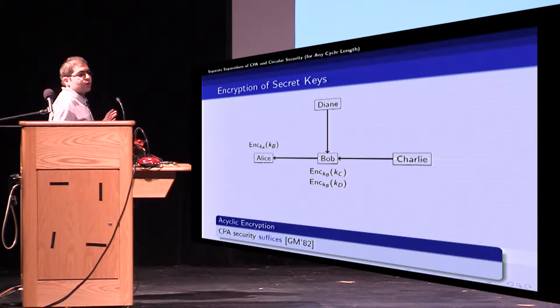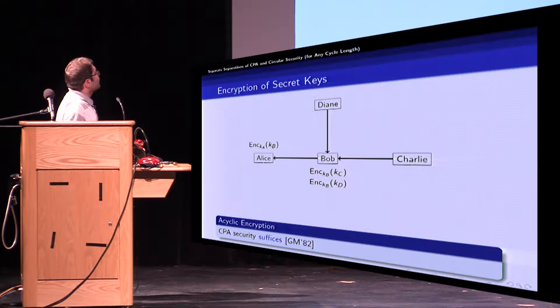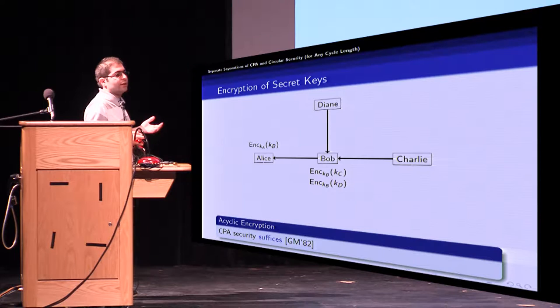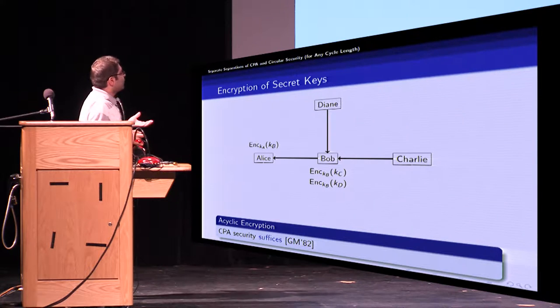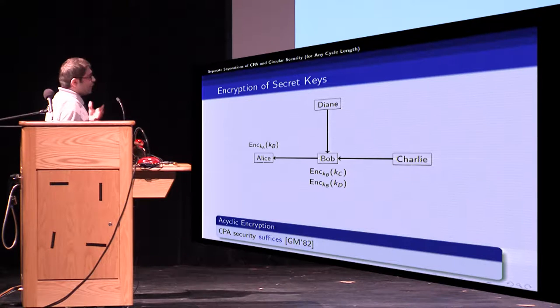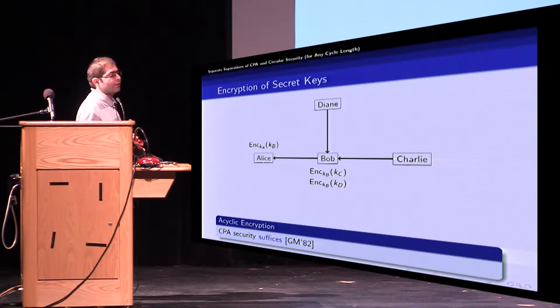So as long as there is no cycle we can say that CPA security of each individual encryption scheme suffices for the CPA security of the whole system. This is observed by Goldwasser and Micali and now the question becomes what if we have a cycle?